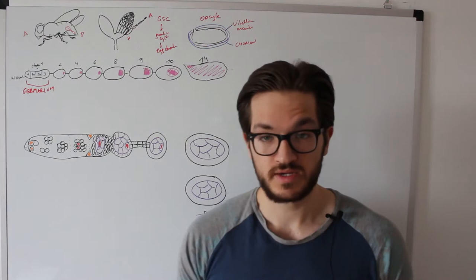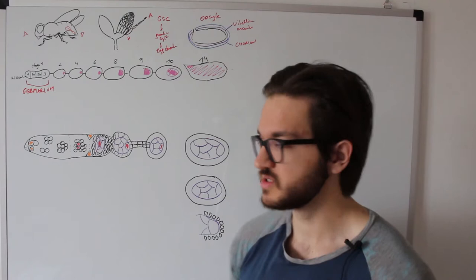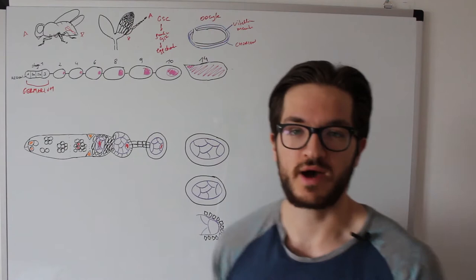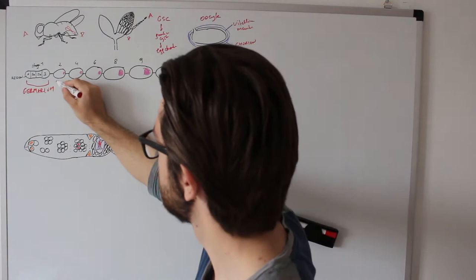The germarium is also subdivided into different areas that we call regions: region 1, 2a, 2b, and 3. Do not confuse regions with stages. Stages refer to these 14 stages, and regions refer to different areas within the germarium. The other stages beyond the germarium are usually called the vitelarium.